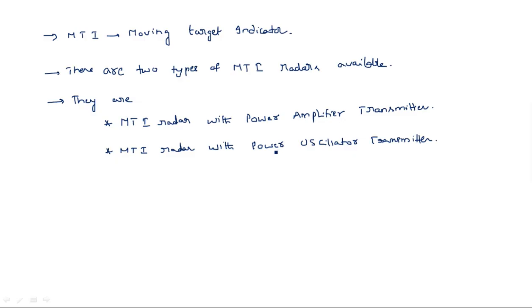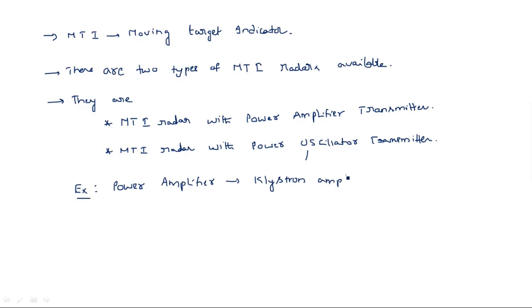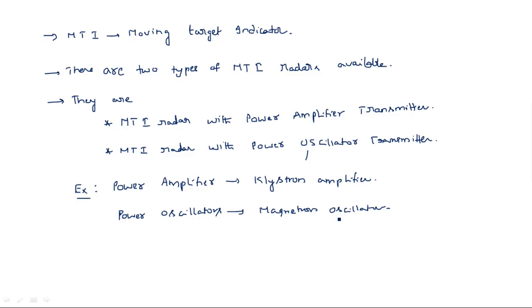If the signal is generated using high power oscillators like magnetron oscillators, then it is MTI radar with the power oscillator transmitter. Examples: for MTI radar with power amplifier, we use klystron amplifiers as power amplifiers. For MTI radar with power oscillator, we use magnetron oscillators. These are the two main devices used in the transmitting section.